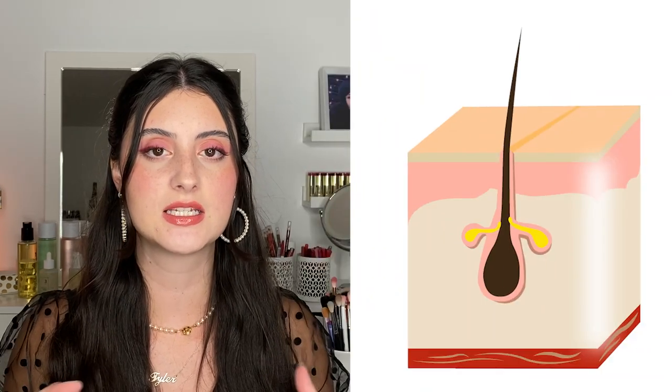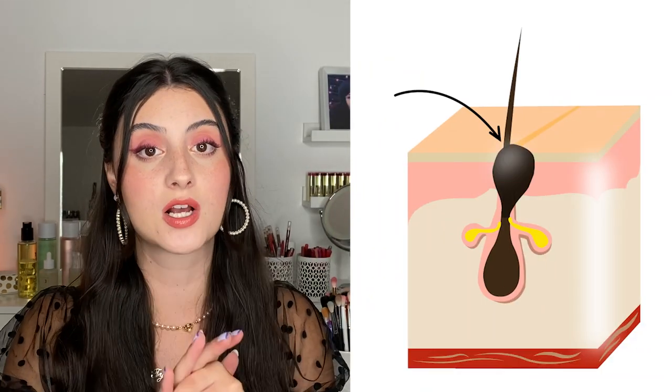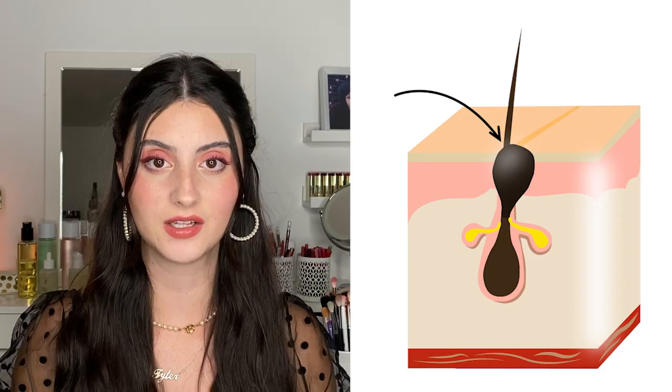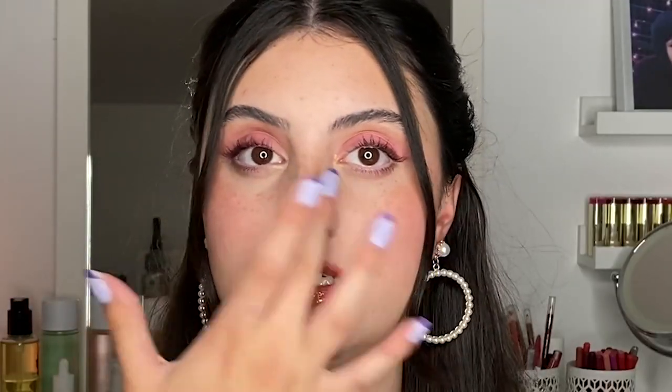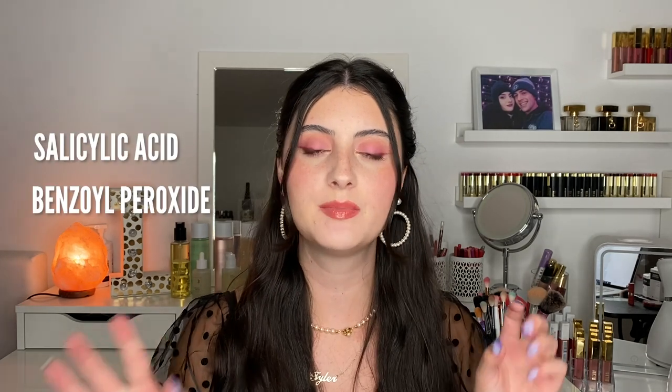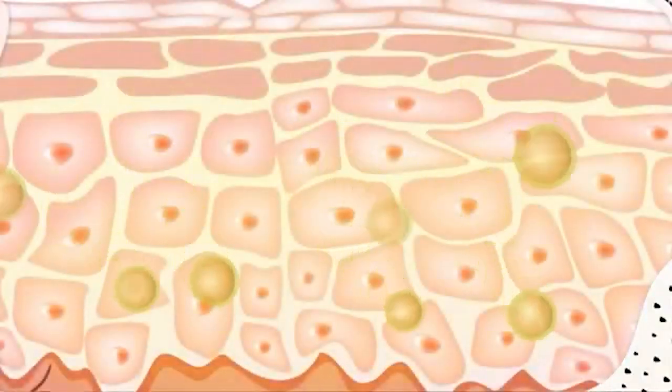Blackheads are clogged by dirt, oil, or excess sebum, and the reason they are black is because the tip of the blackhead oxidizes, giving it that black color. Blackheads tend to be very common in teens and adults — really at any age — and they usually appear in the T-zone, but they can be treated. Products with ingredients such as salicylic acid or benzoyl peroxide will probably be your best friend.